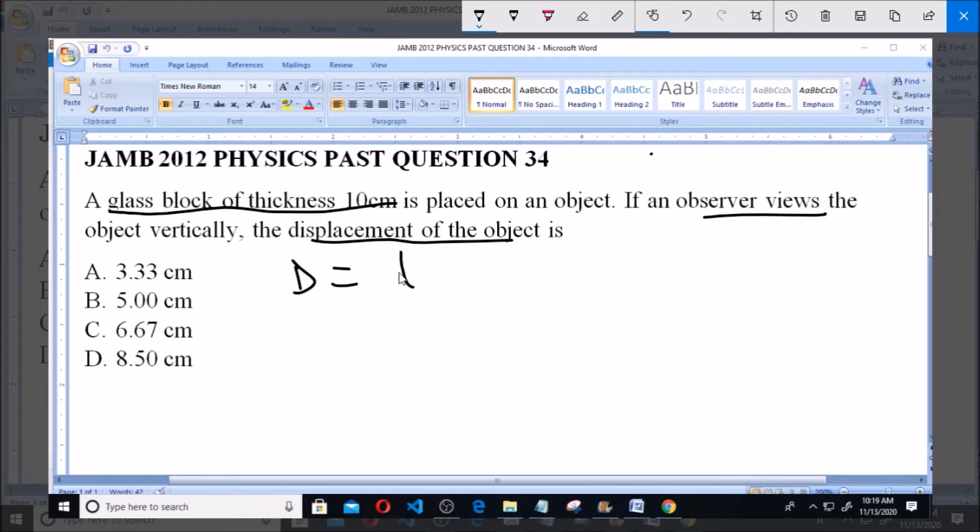The displacement is given as t(1 - 1/n), where n is the refractive index of glass. The refractive index of glass is 1.5, and t, which is our thickness, is given as 10 cm.